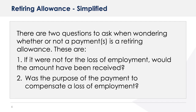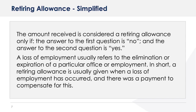To clarify what is a retiring allowance in the case of loss of employment, there are two questions to ask: if it were not for the loss of employment, would the amount have been received? And was the purpose of the payment to compensate a loss of employment? The amount received is considered a retiring allowance only if the answer to the first question is no and the answer to the second question is yes. A loss of employment usually refers to the elimination or expiration of a particular office or employment. In short, a retiring allowance is usually given when a loss of employment has occurred and there was a payment to compensate for this.